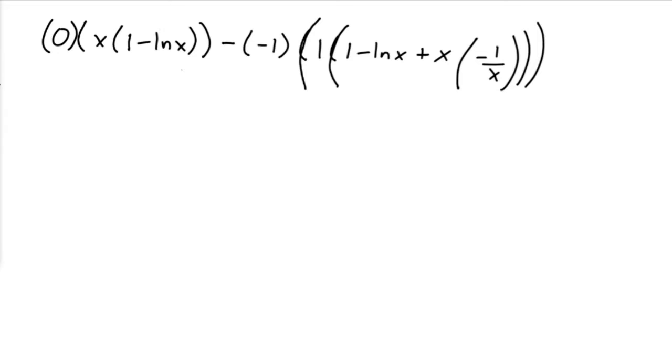The very first thing I want to do is to simplify all this stuff. Notice that here I've got 0 times this, so this whole thing is going to equal to 0. These two, minus negative 1, this is just positive 1. And then here, this is 1 times all of this stuff, so I can get rid of it. Inside of here, all I'm going to have is 1 minus natural log of x, and then x times negative 1 over x. That is going to equal to 1.